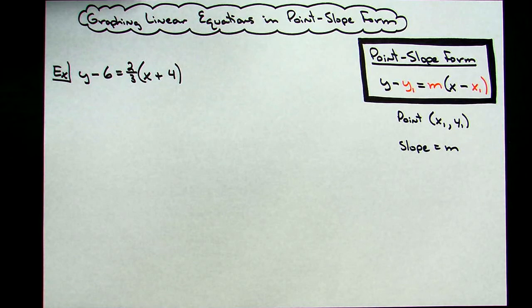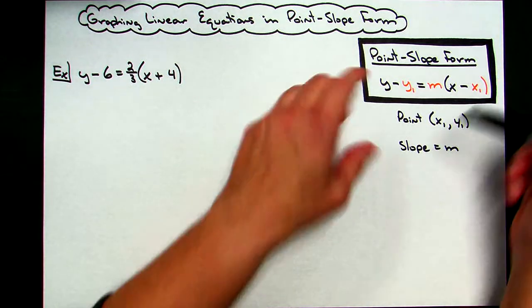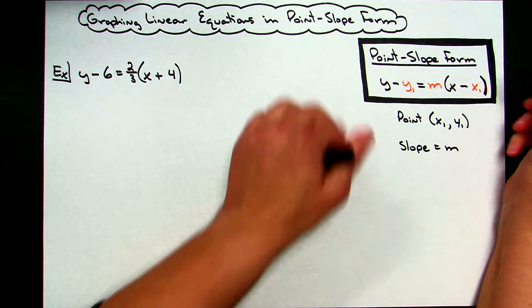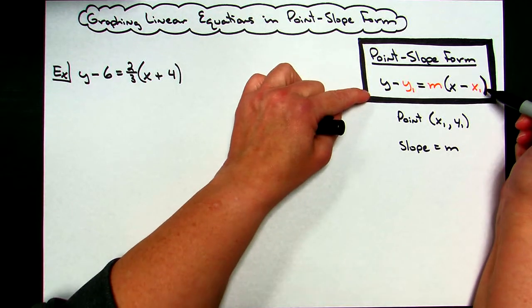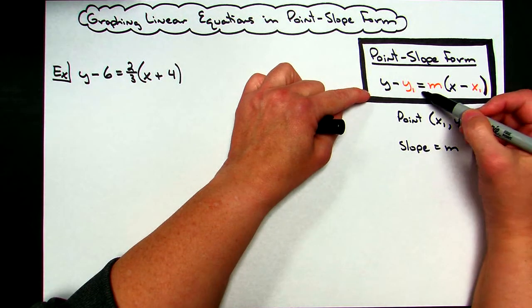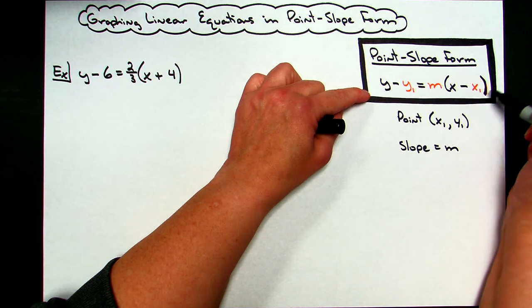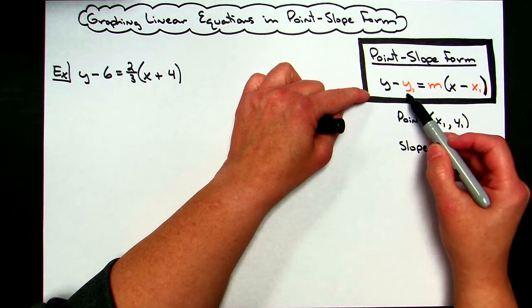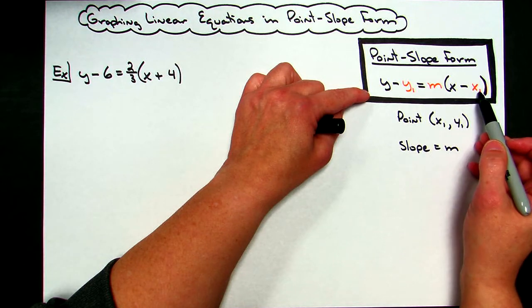Okay, today we're going to take a look at graphing linear equations in point-slope form. Before we get started, I have put point-slope form down here as a formula: y minus y sub 1 equals m times the quantity x minus x sub 1. I have put the three things that will be our numbers in our equations in orange so that they stand out.